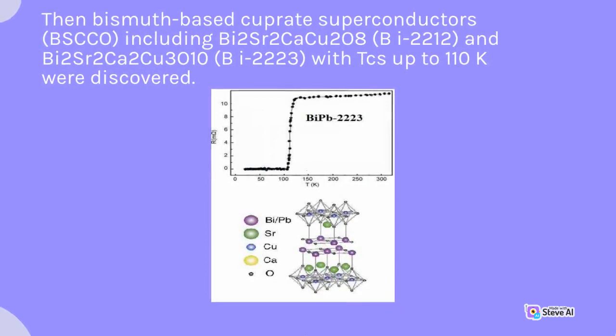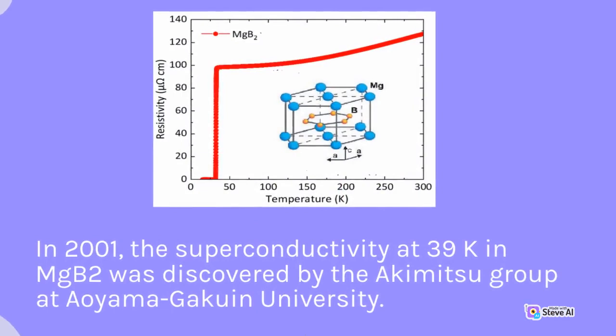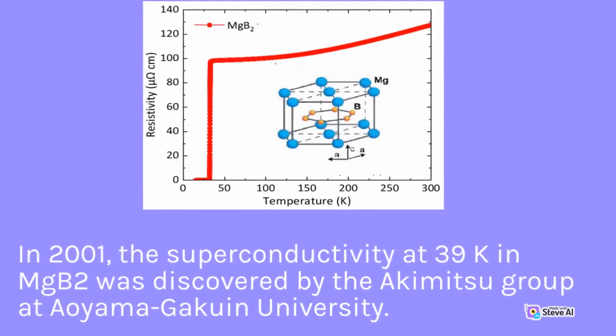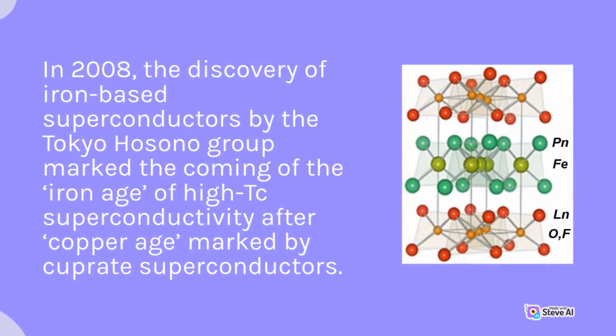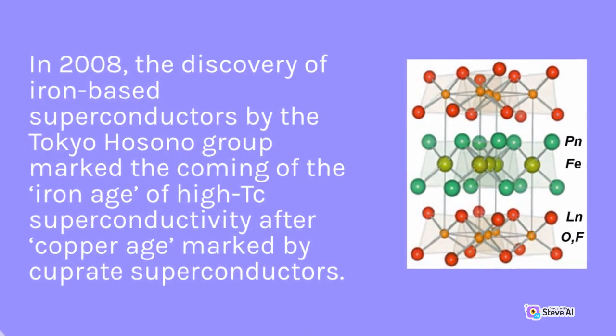In 2001, superconductivity at 39 K in MgB2 was discovered by the Akimitsu group at Aoyama Gakuin University. In 2008, the discovery of iron-based superconductors by the Hosono group in Tokyo marked the coming of the iron age of high-Tc superconductivity, after the copper age marked by cuprate superconductors.